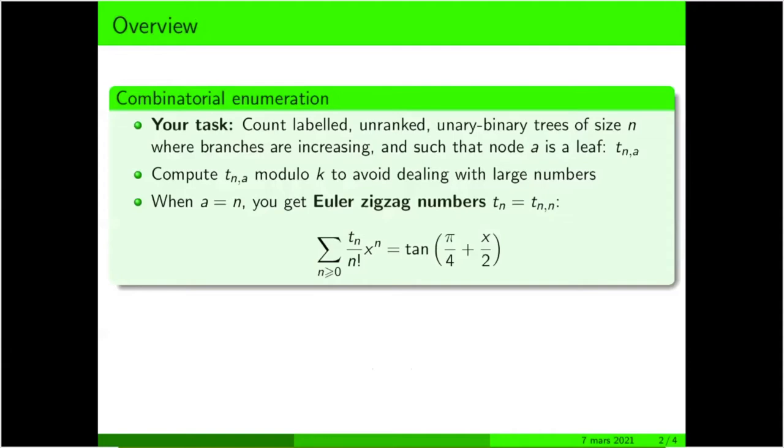n is the size of the tree, that is, the number of nodes of the tree. We want to count trees that are unary-binary, which means that each node has 0, 1, or 2 children.